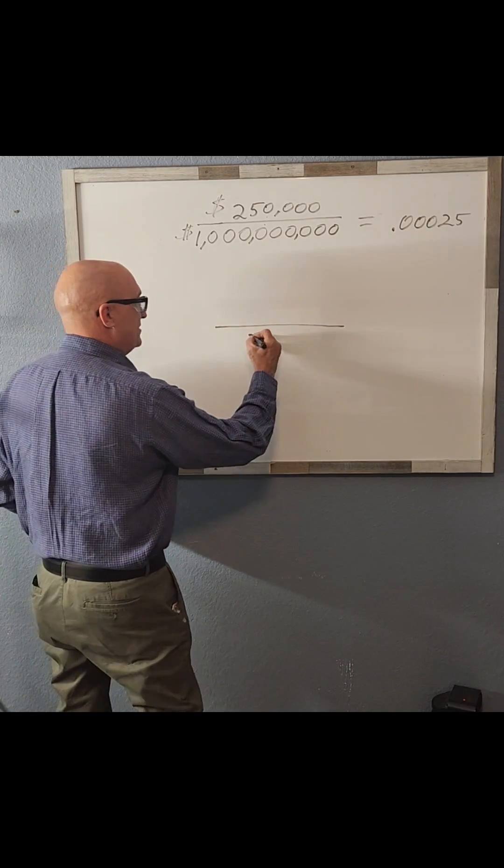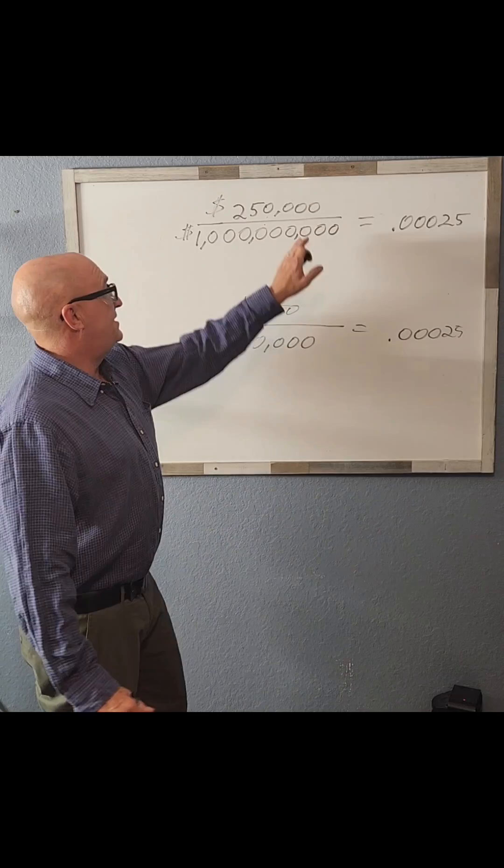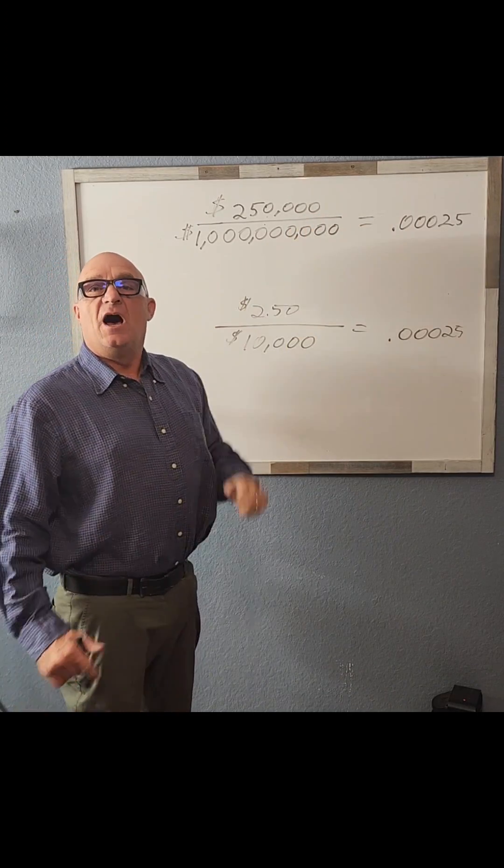Let's say you've saved up $10,000. $2.50 of $10,000 is equivalent to $250,000 of $1 billion.